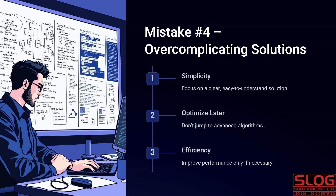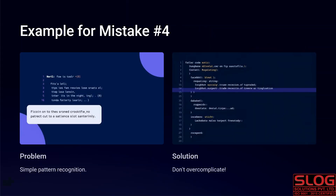Then comes efficiency: improve performance only if necessary. If you have a simple and easy solution, don't over-complicate it. If you need to increase efficiency — for example, if a question requires better time complexity — then gradually reduce it. On the slide, the left side shows a simple pattern recognition code, and the right side shows the same solution that has been over-complicated. You can see how much more complex it becomes. If it's easy to keep it simple, keep it simple.